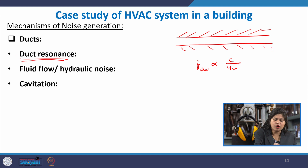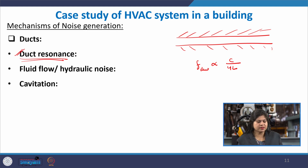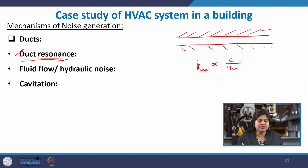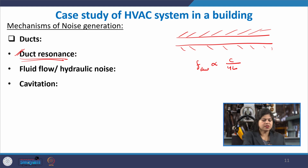Duct resonance is a very common noise source in HVAC ducting systems. Hydraulic noise arises simply from the flow of fluid — the gushing of water or flow of air creates noise due to turbulence, and cavitation noise manifests as the bubbling of liquids. These are the major types of noise within ducts.